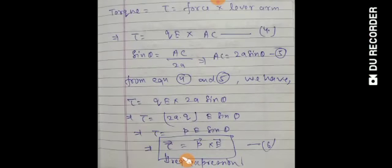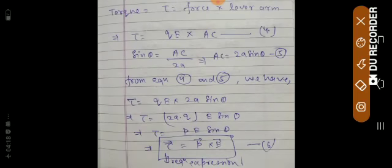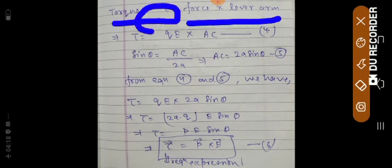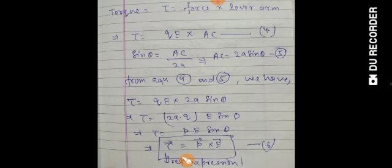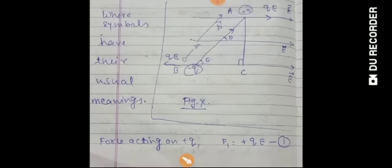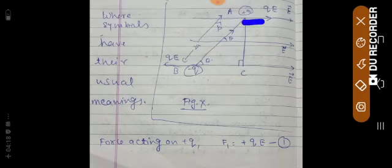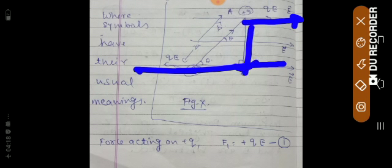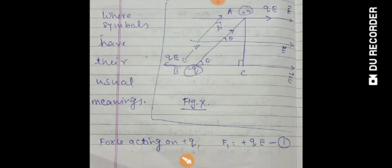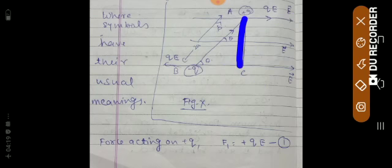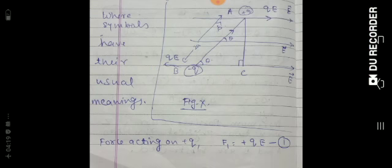As we know from 11th class, torque τ equals force multiplied by the lever arm. The lever arm is the perpendicular distance between the two equal and opposite forces. As you can see in the figure, the two forces act at plus q and minus q, and the perpendicular distance between them is AC. So AC is your lever arm.